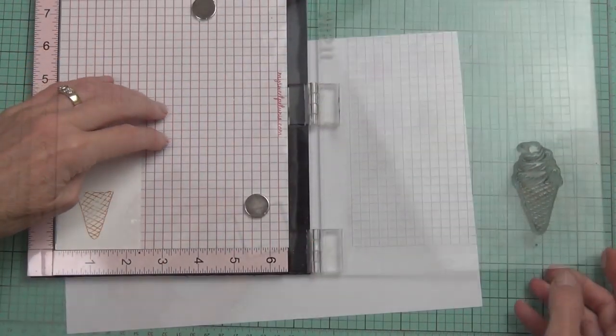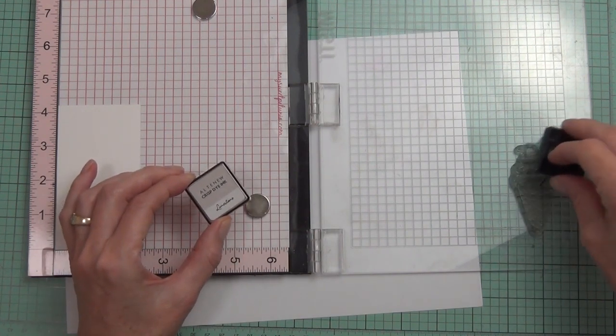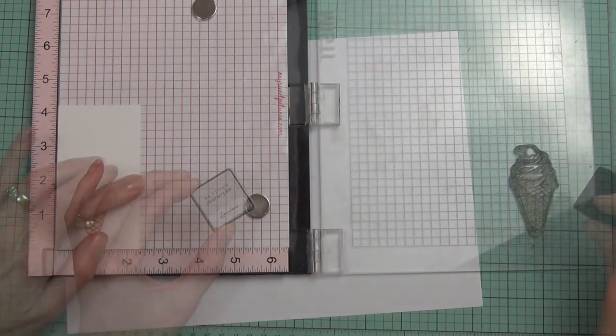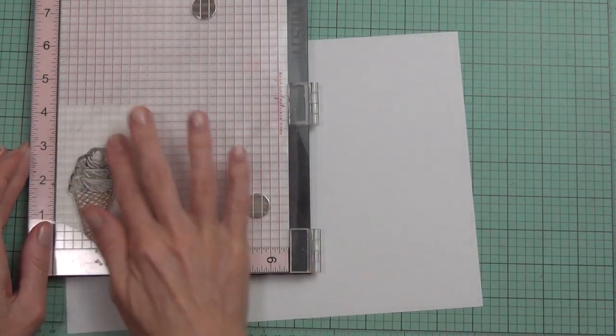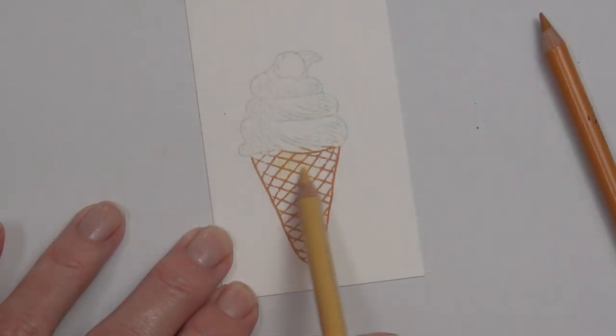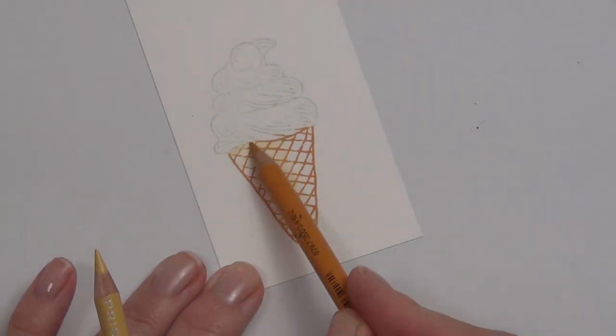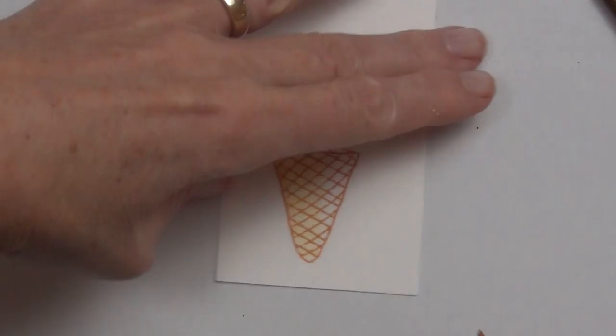I'm using the colored ink to actually add color to my image. I've got my stamp positioned on my Misti so that I can selectively ink my stamp. Basically I added the ink to the cone portion first, stamped that, and then added ink to the ice cream portion. I used the caramel toffee and the limestone.